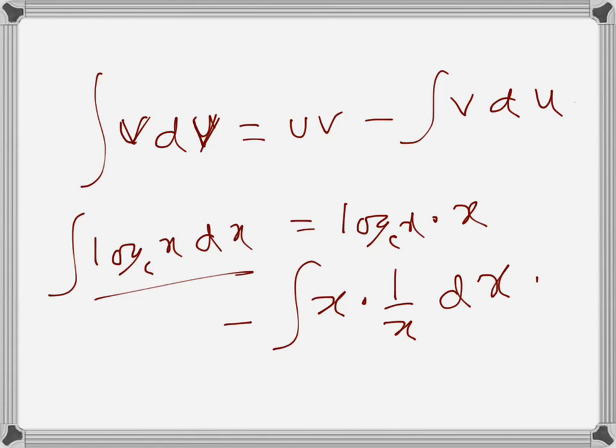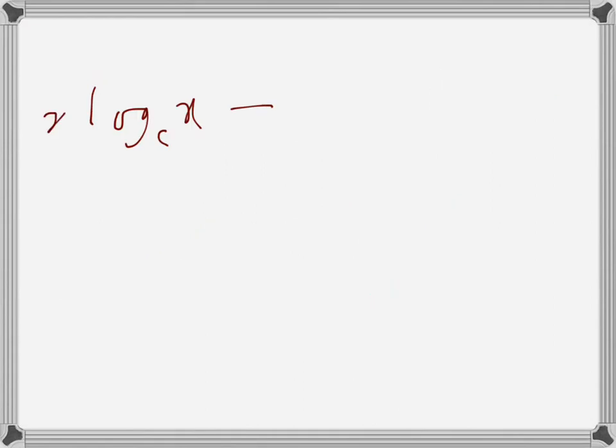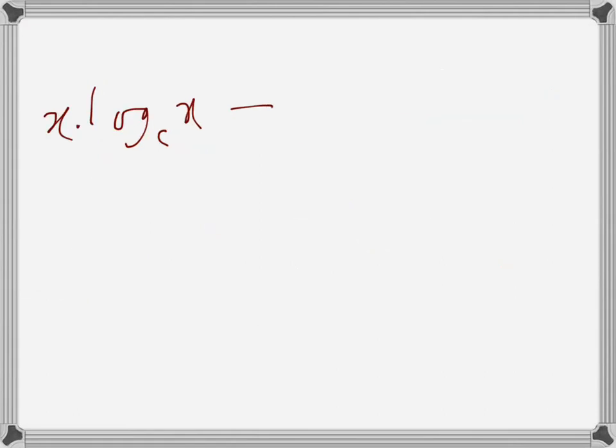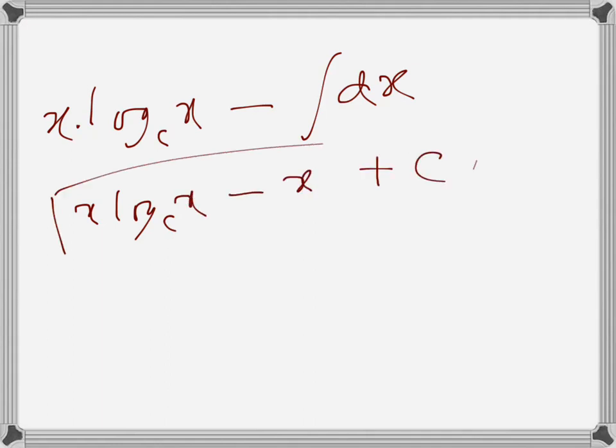This becomes x log_e x minus integral of dx, which equals x log_e x minus x plus C, where C is the integration constant. So this is the antiderivative of log_e x.